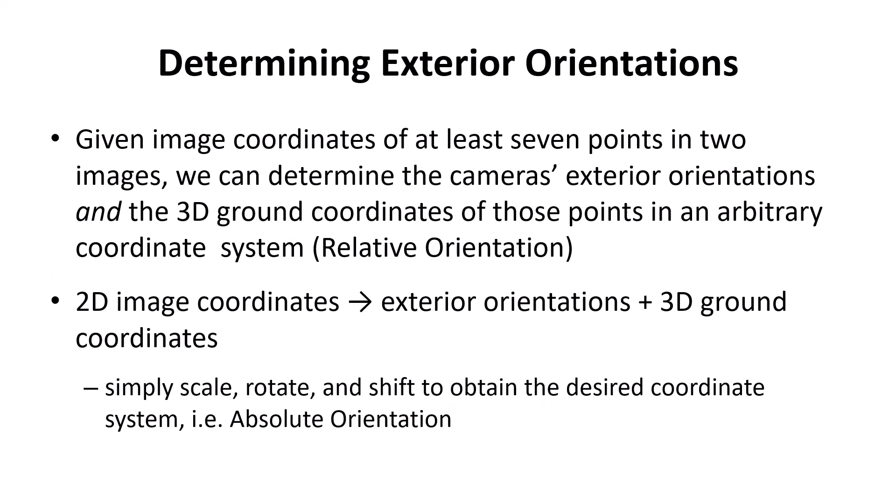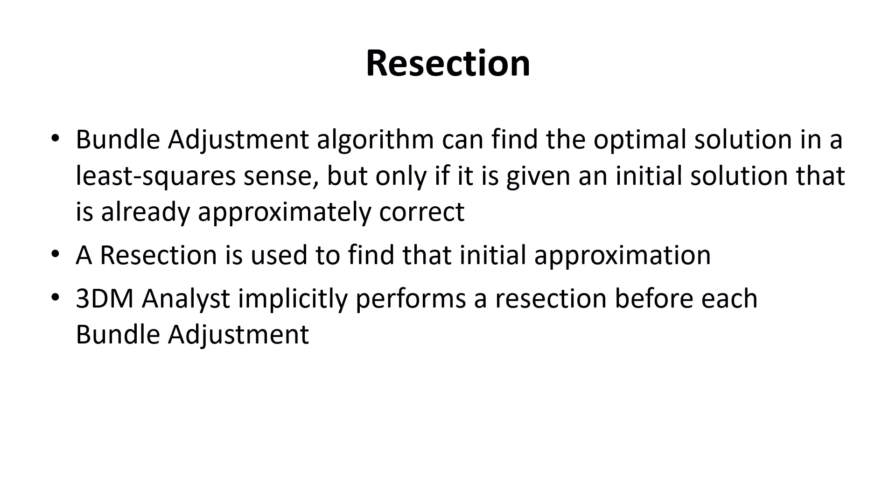Given the image coordinates of at least seven points in two images, we can determine the camera's exterior orientations and the 3D ground coordinates of all those points in an arbitrary coordinate system if you're doing a relative orientation. Of course, the software will attempt to use far more than seven points, so you have redundancy. If you did a relative orientation, you'd have to scale, rotate, and shift the resulting model to get it into the desired coordinate system. The process of doing a bundle adjustment actually starts first with finding an initial approximate solution to this complex mathematical equation — and that approximate solution is found using a method called resection.